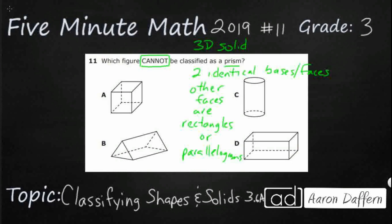So let's see if we can identify some of these shapes because we want to find the one that is not classified as a prism. Really we are looking at solids, not necessarily shapes.